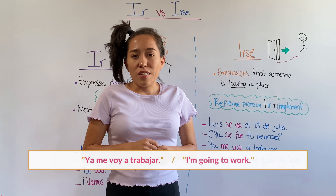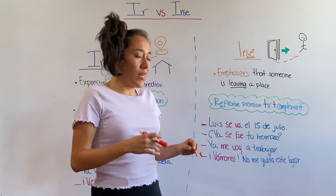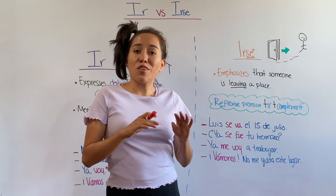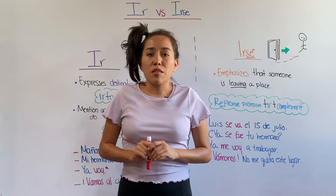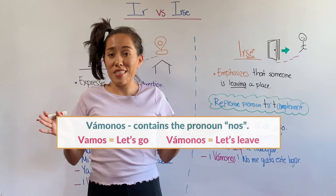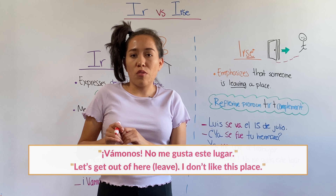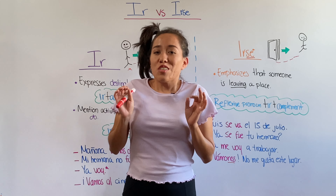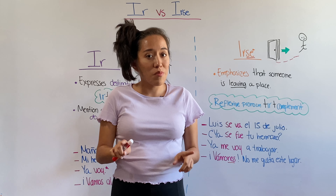'Ya me voy a trabajar' — I'm going to work. Even though it translates as 'to go,' when I say 'ya me voy' in Spanish, I'm emphasizing that I'm leaving this place. I know I don't want to go to work and I want to keep chatting with you, but I have to. The fourth example: 'Vámonos.' Check this difference — you have a pronoun here. 'Vámonos al cine' means 'let's go to the movies,' versus 'Vámonos' alone — 'No me gusta este lugar, I don't like this place' — it's more like 'let's get out of here.' Don't rely on translation all the time, because as you can see, IRSE and IR often share the same translation but you're not expressing the same thing.